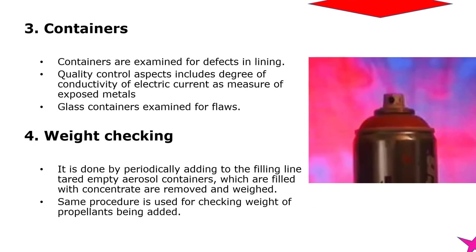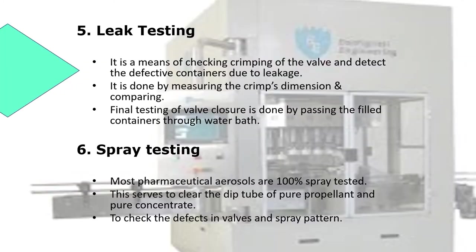Containers are examined for defects in lining; quality control includes the degree of conductivity of electric current as a measure of exposed metal. Glass containers are examined for flaws. Weight checking is done by periodically adding pre-weighed empty aerosol containers to the filling line; the same procedure is used for checking the weight of propellant added. Leak testing checks crimping of the valve and detects defective containers; it is done by measuring crimp dimensions and comparing. Final testing of valve closure is done by passing filled containers through a water bath. Spray testing: most pharmaceutical aerosols are 100% spray tested to clear the dip tube, check defects, and examine spray patterns.